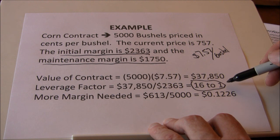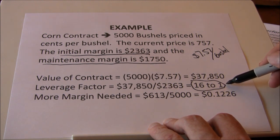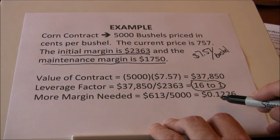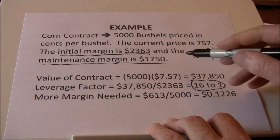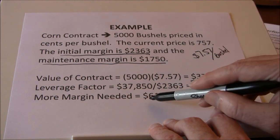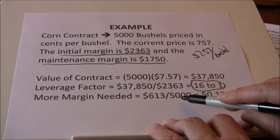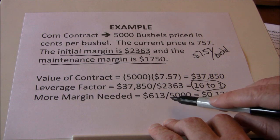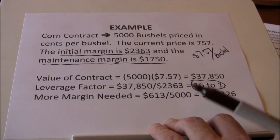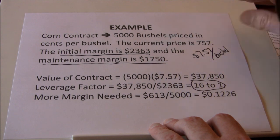Futures are often described as very risky because of the leverage impact. We only put up a small amount of the value we're controlling, and that gives us tremendous leverage. We may require more margin when we dip below the maintenance margin. The difference between the initial margin and the maintenance margin is $613 on 5,000 bushels, so if corn drops by 12.25 cents, I'm going to have to add more margin to my account and bring it back up to $2,363.